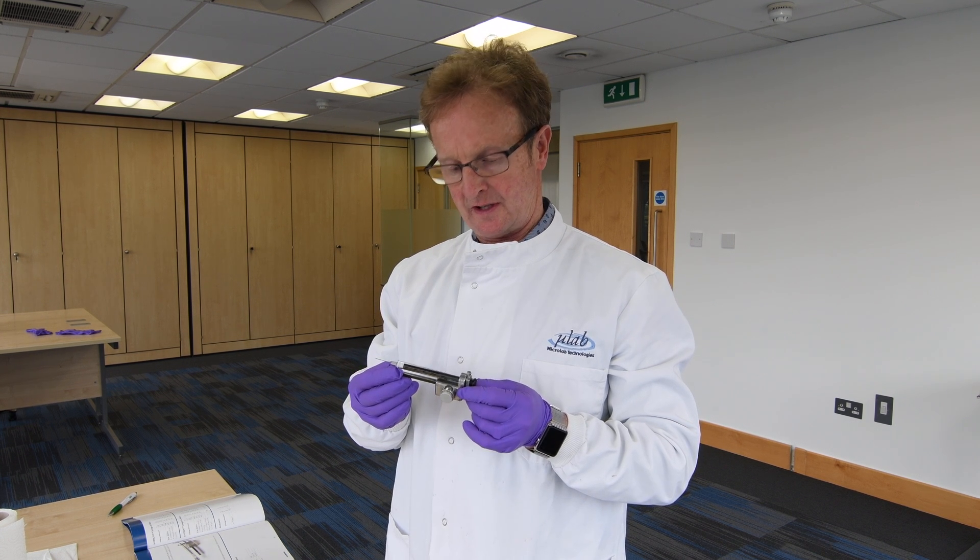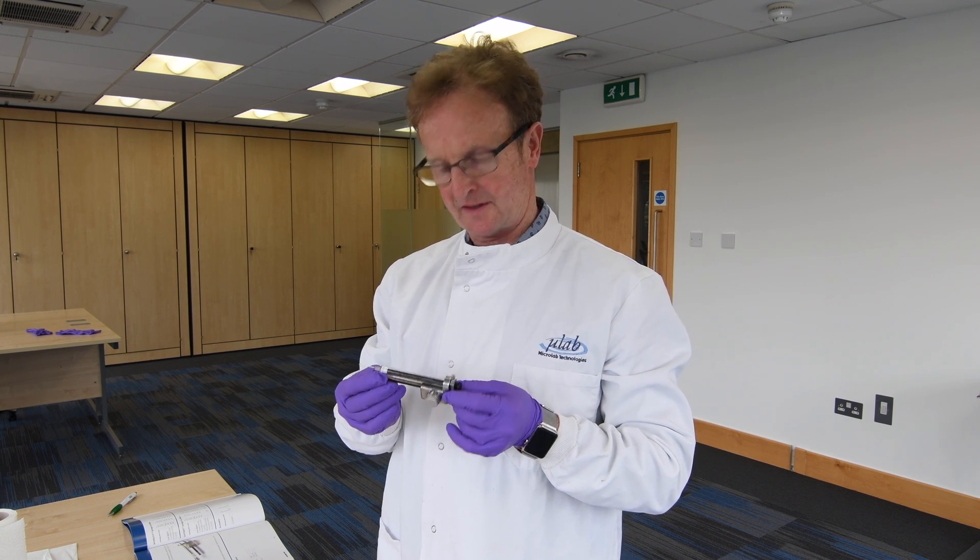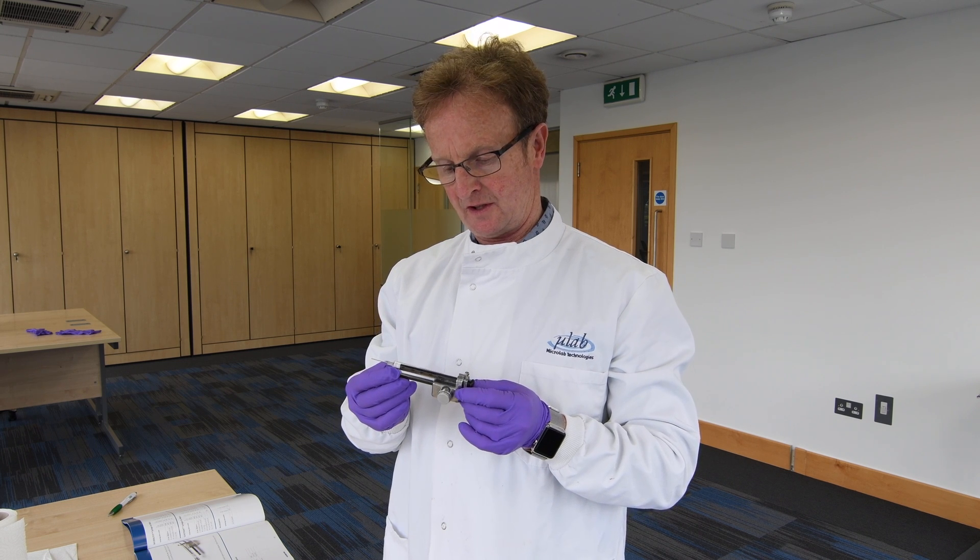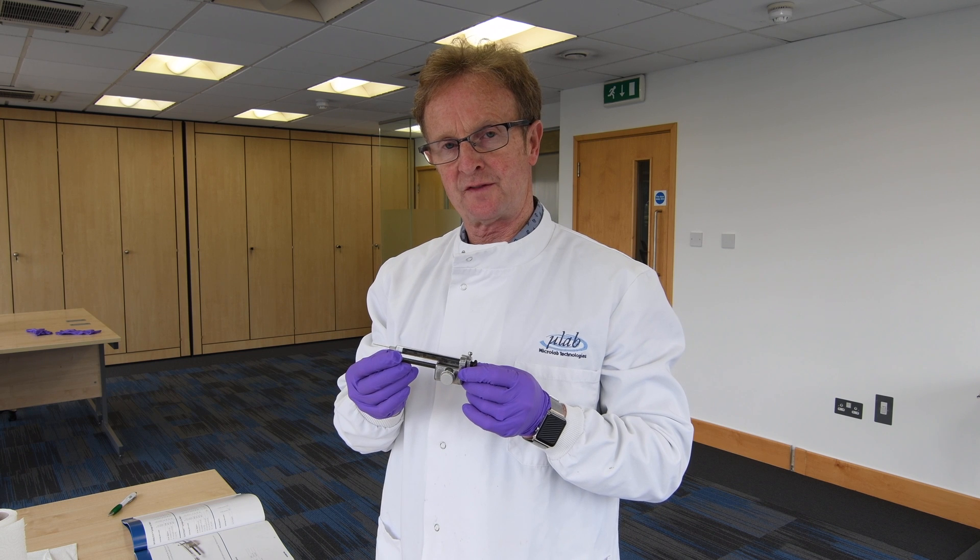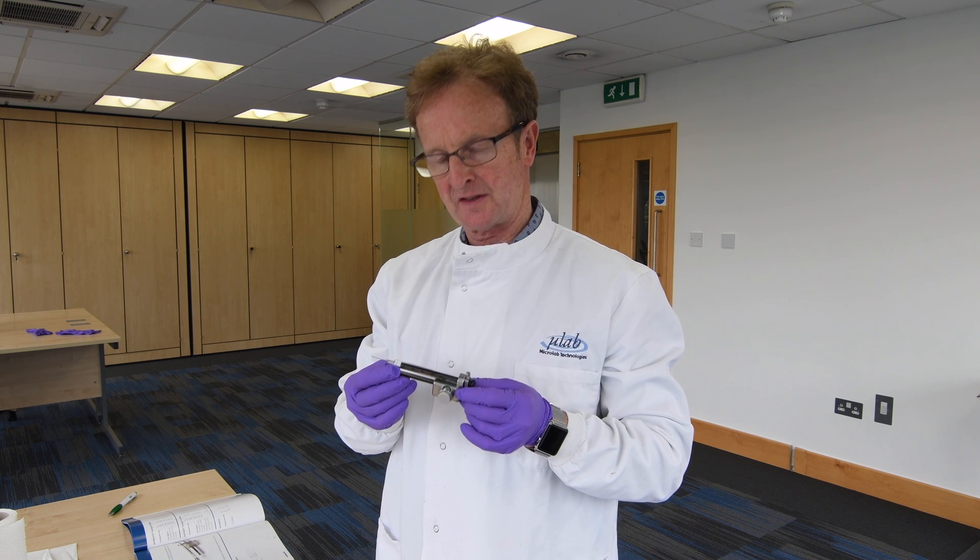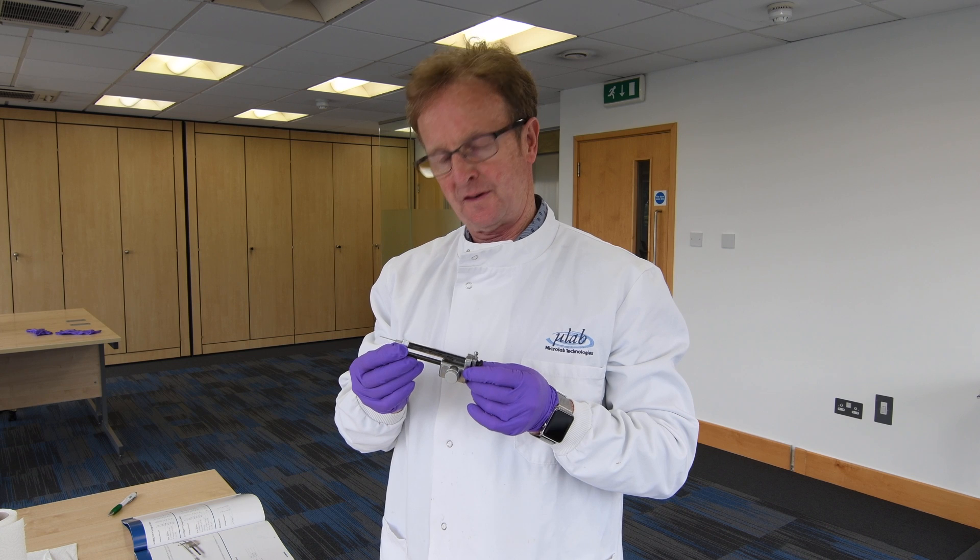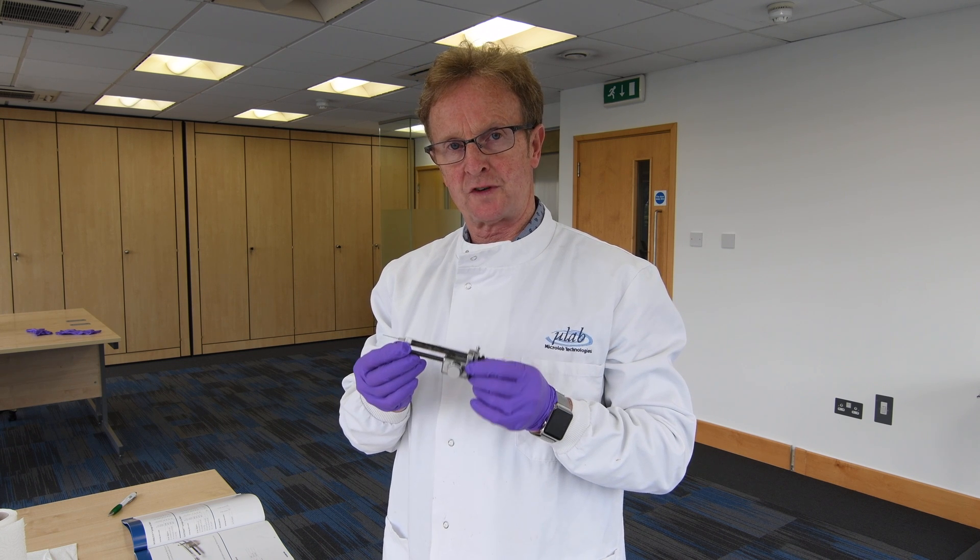This is a PB600. It's a mechanical device designed and patented by Hamilton, which used in conjunction with their syringes between 25 microliters and 2500 microliters, allows us to give 50 incremental volumes of the syringe volume.